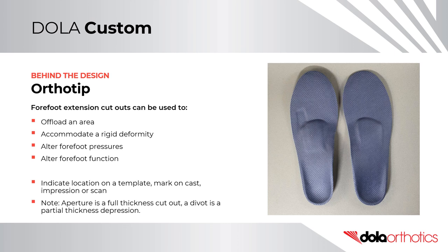Ortho Tip – Forefoot extension cut-outs can be used to offload an area, accommodate a rigid deformity, alter forefoot pressures, or alter forefoot function. You can indicate the location of your cut-out by using a template or marking on your cast, impression, or scan. An aperture is a full thickness cut-out, whereas a divot is a partial thickness depression.